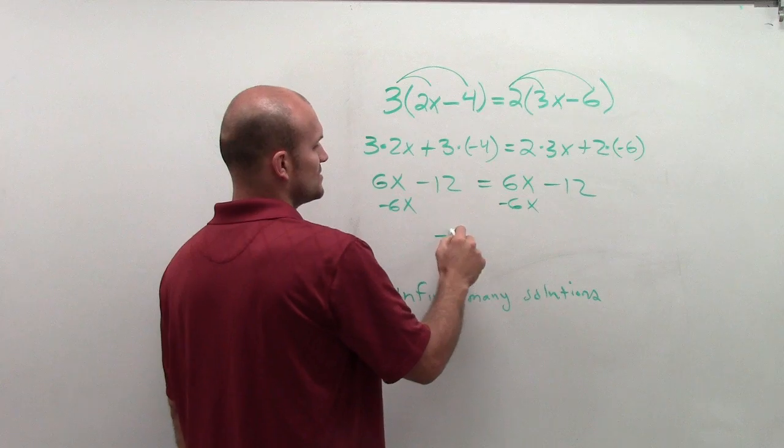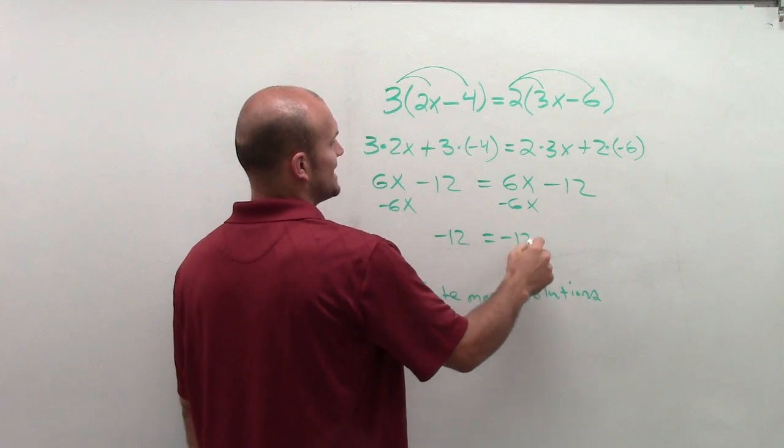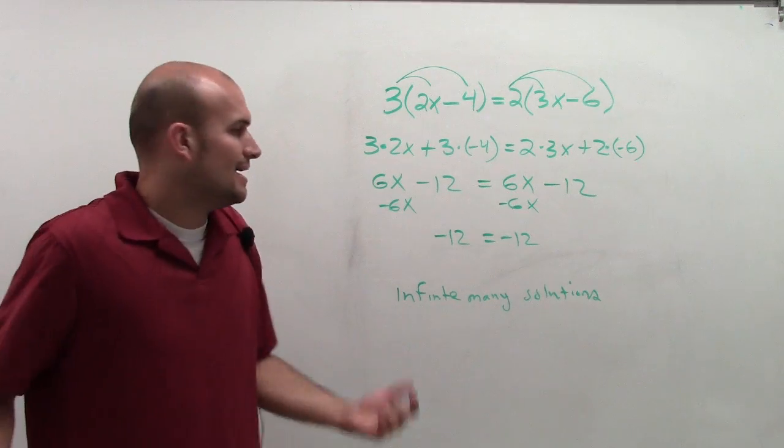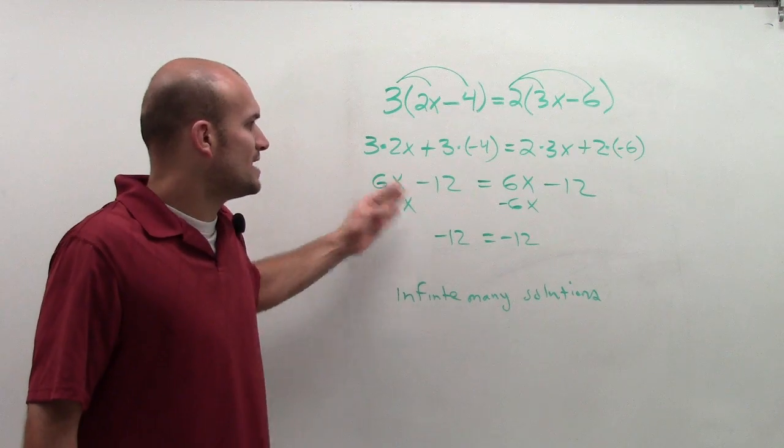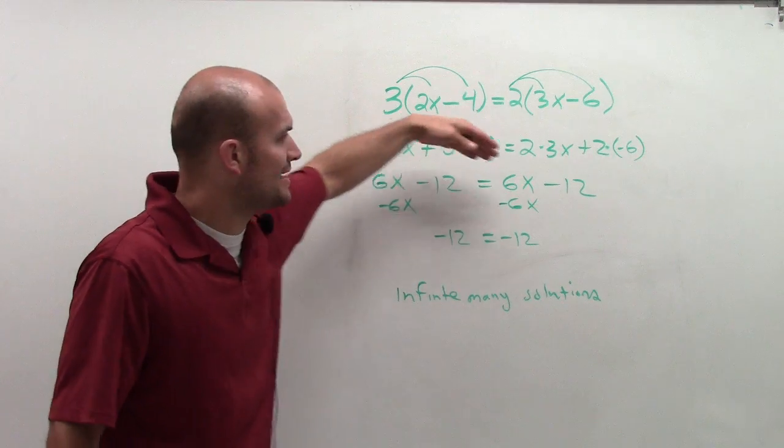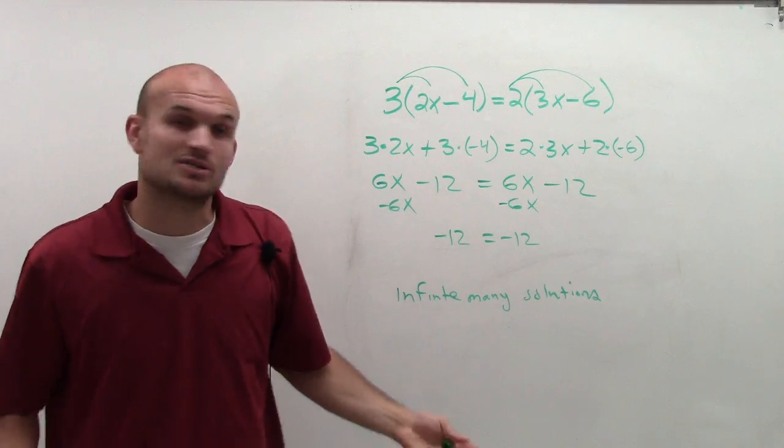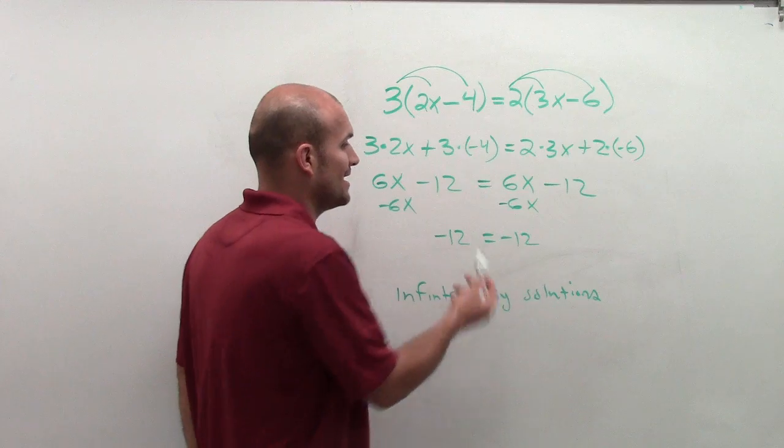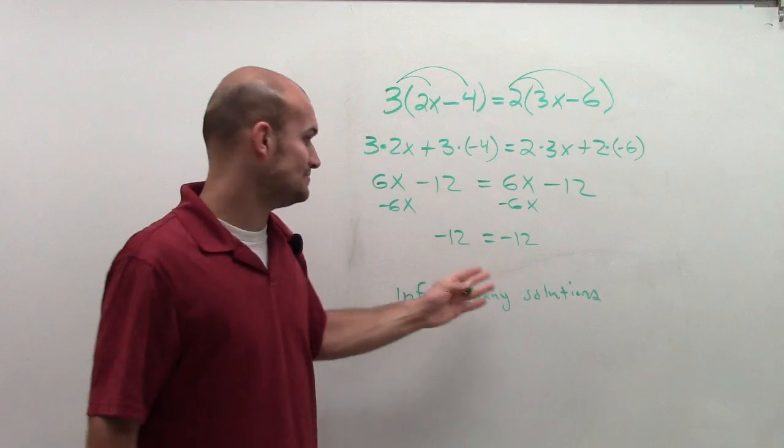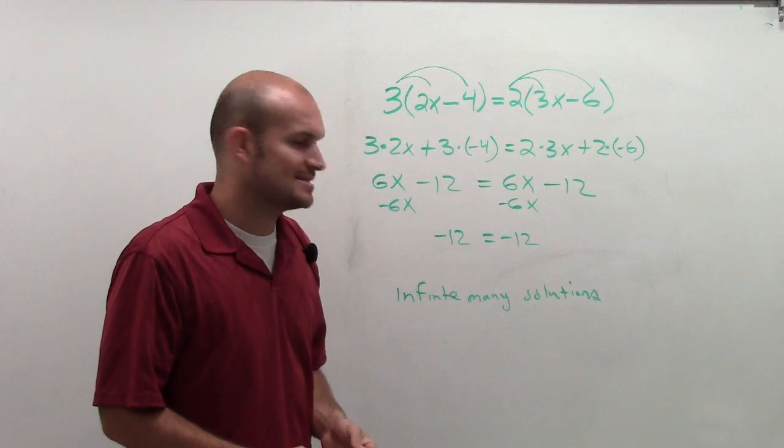I'm going to get zeros for the terms and I'll have negative 12 equals negative 12. And again, it doesn't matter what number you plug in. When I do that on the left and the right side, I'm going to multiply by 6 and I'm going to subtract 12. So therefore, either way, I'm always going to get the exact same point.